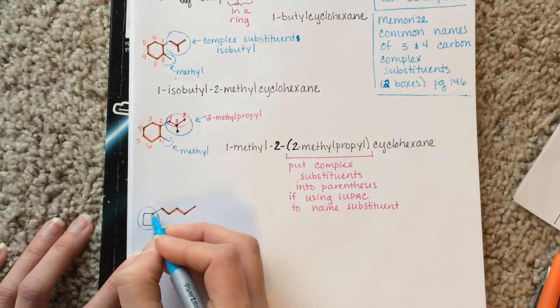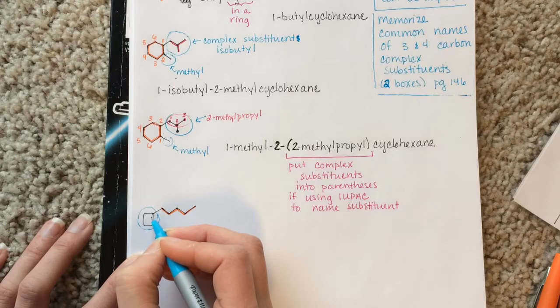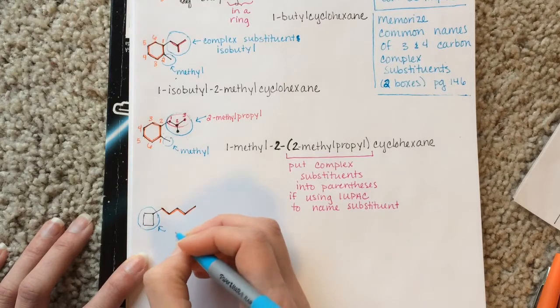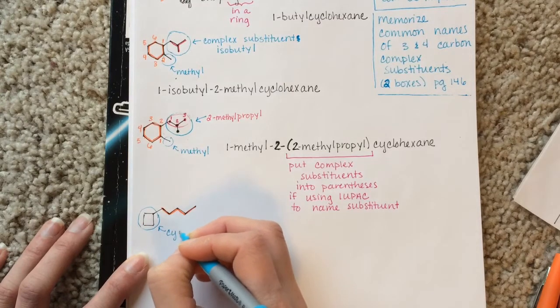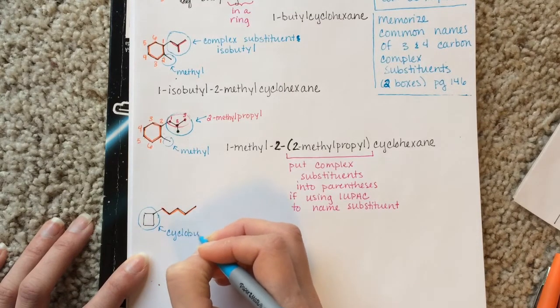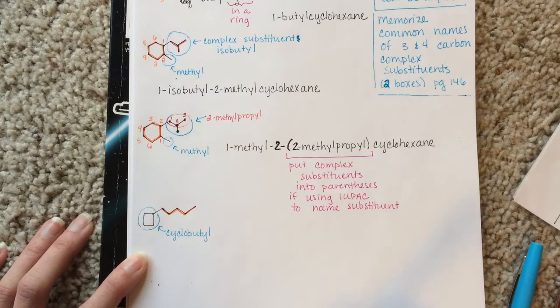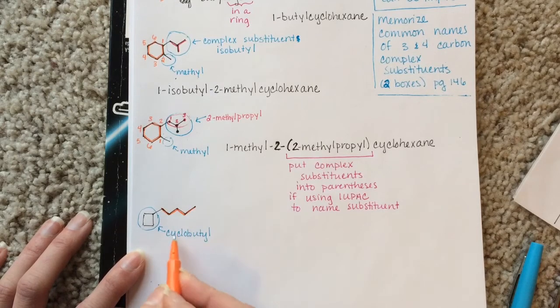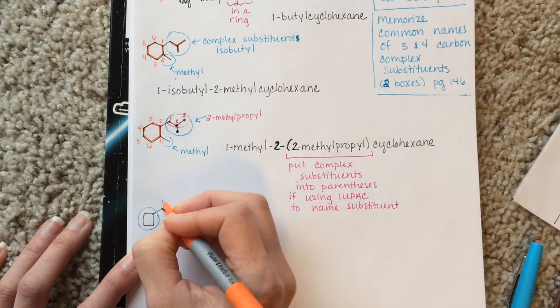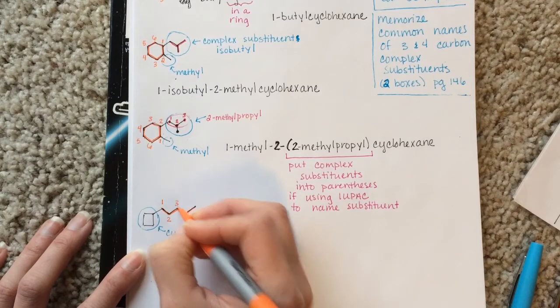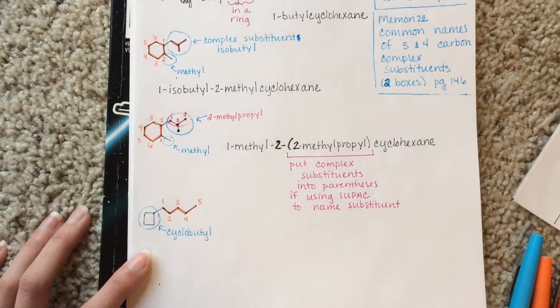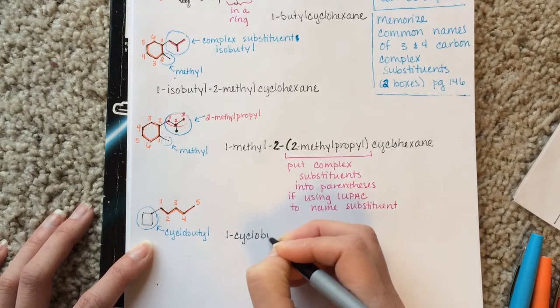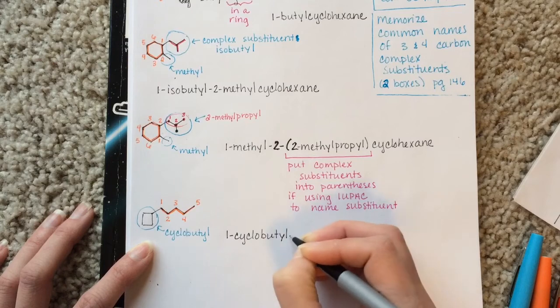If it was a four-carbon substituent, we would call it a butyl. It's a four-carbon ring substituent. So we will call this cyclobutyl. And then, next, we're going to number the carbon atoms in our chain to put cyclobutyl on the lowest possible number. That's going to be from left to right. And put the name together. 1-cyclobutylpentane.